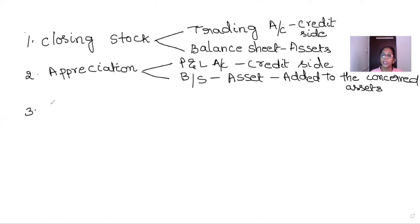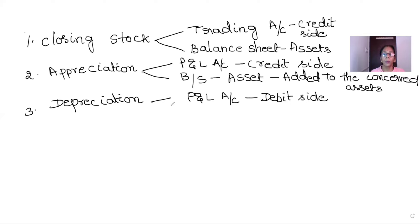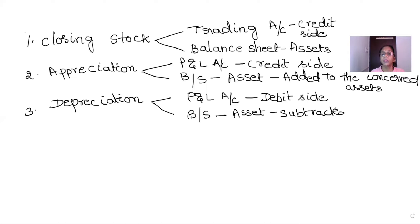The calculated appreciation is shown on the credit side of the profit and loss account, and in the balance sheet, this appreciation is added back to the concerned asset. Next is depreciation — the gradual decrease in the value of an asset. Since we lose a part of our asset, depreciation is shown on the debit side of the P&L account. In the balance sheet, the depreciation is subtracted from the respective asset.